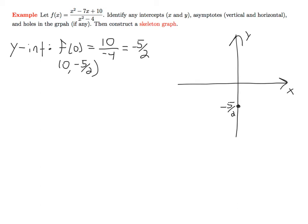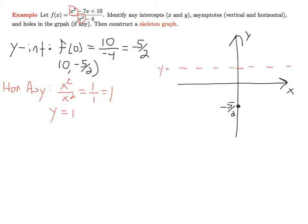Next, we'll take a look at any horizontal asymptotes. To find the horizontal asymptote, we take the ratio of the leading terms. The leading terms are x squared over x squared — they have the same degree — so we take the ratio of the leading coefficients, which gives us 1. So we have a horizontal asymptote at y equals 1. On our skeleton graph, we'll put a dashed horizontal line at y equals 1.